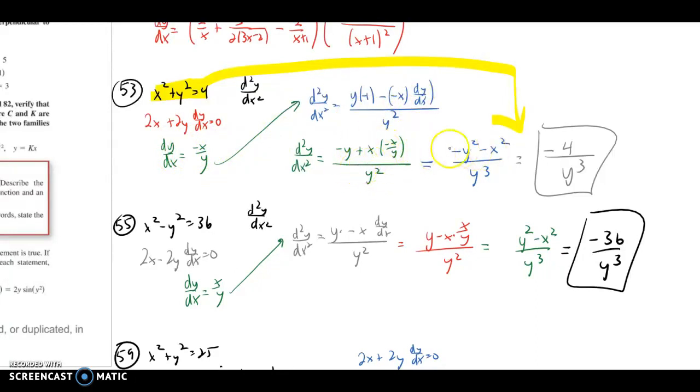And then from green to blue, I just multiplied everything by y. So we didn't have this fraction within the fraction. So there is our blue. One thing we notice, though, is that in the numerator, there's this negative y squared minus x squared. If you factor a negative out, so negative quantity y squared plus x squared, or negative quantity x squared plus y squared. From the very beginning, we know that x squared plus y squared equals 4, which makes the numerator become just a negative 4. And it's going to be over y cubed.